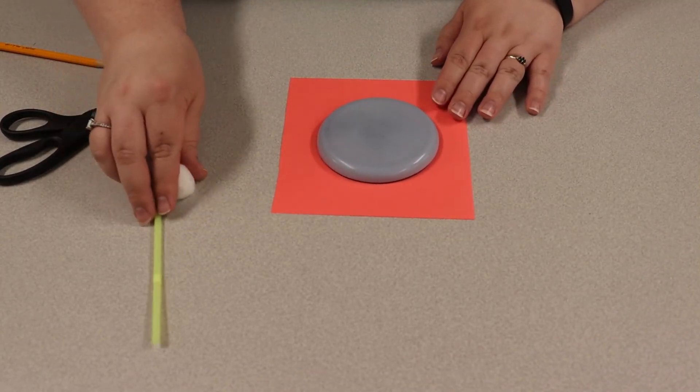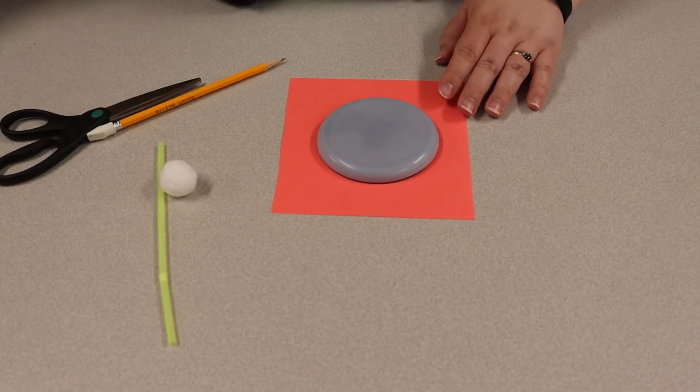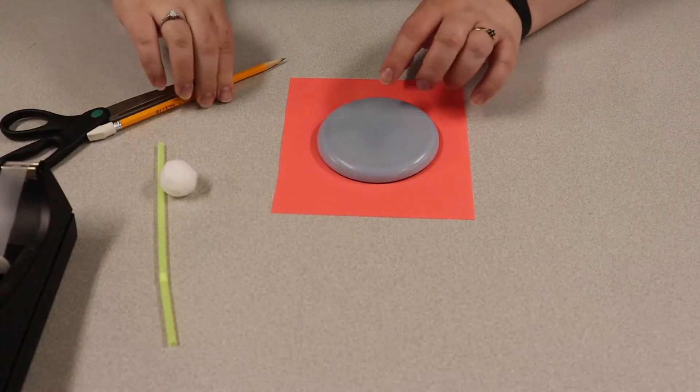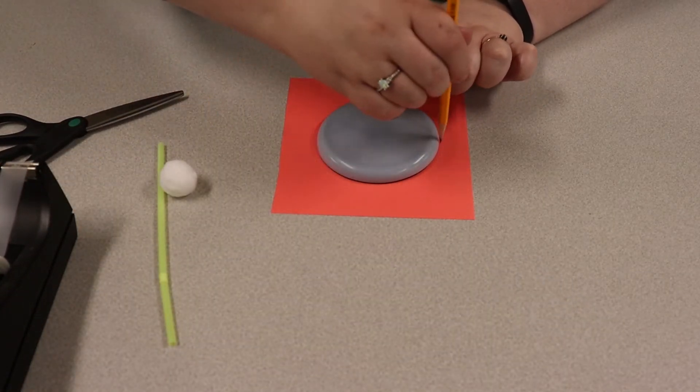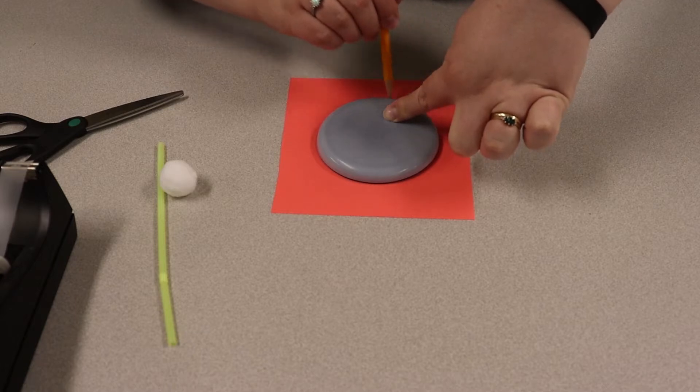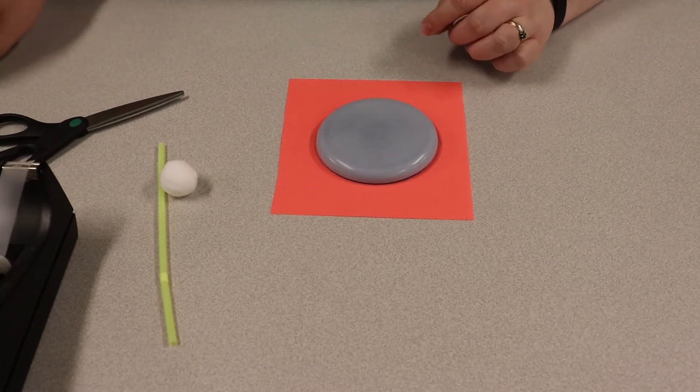All right, again super simple, easy to make here. I also forgot we're gonna need some tape. So we're gonna start out here tracing our circle around whatever you have to make your circle.